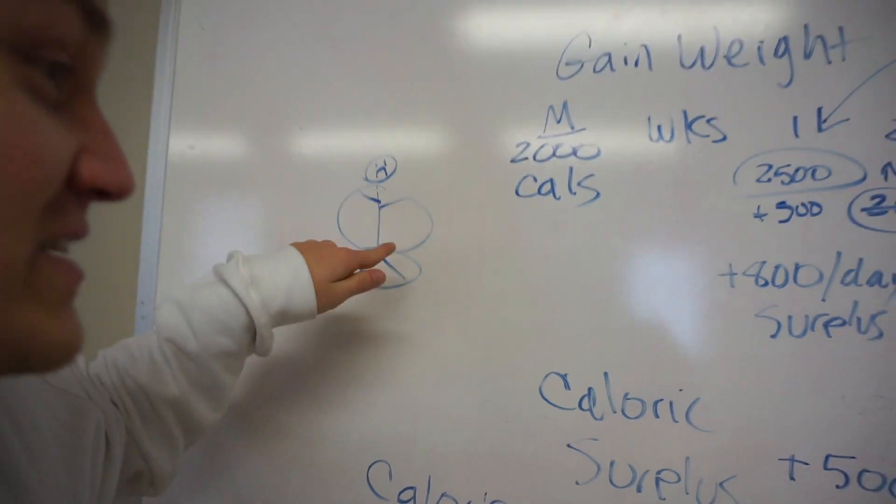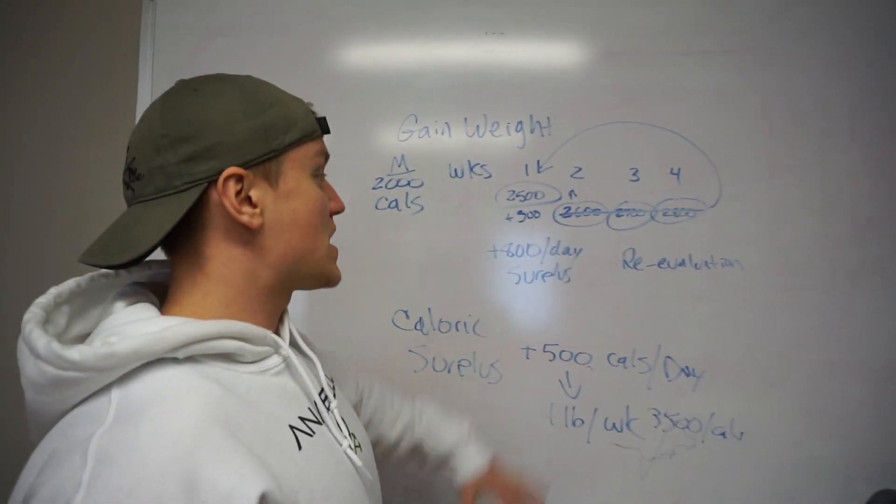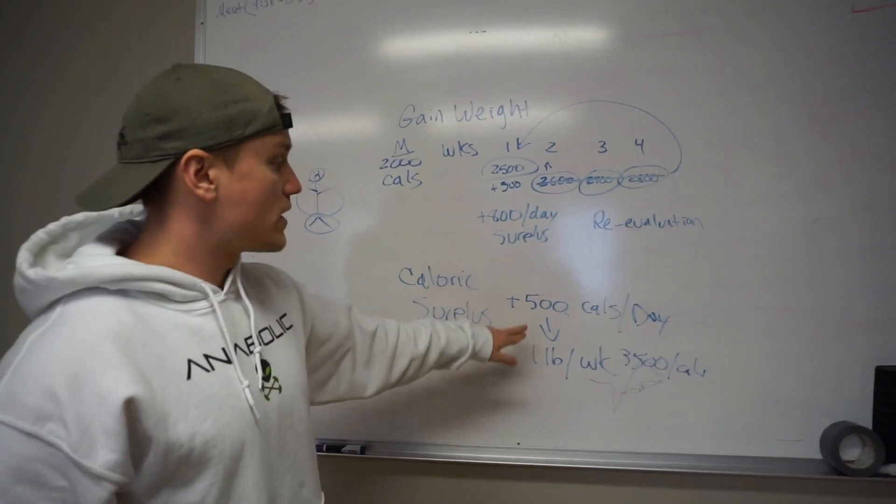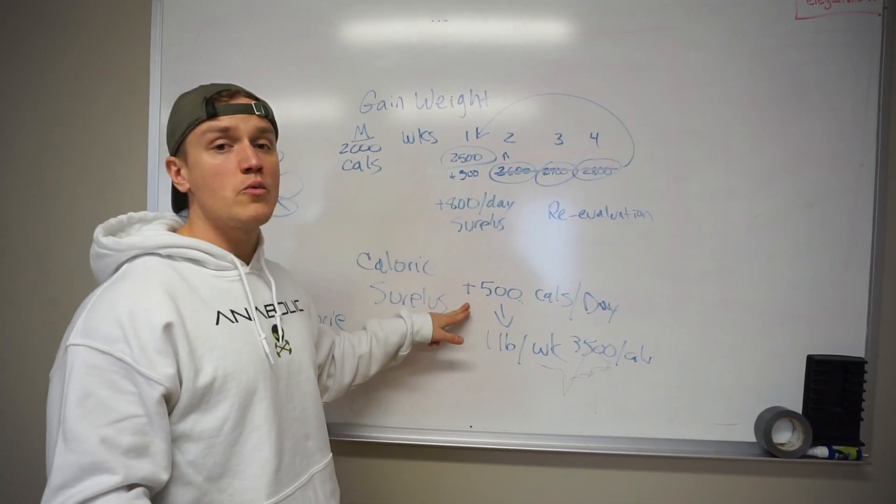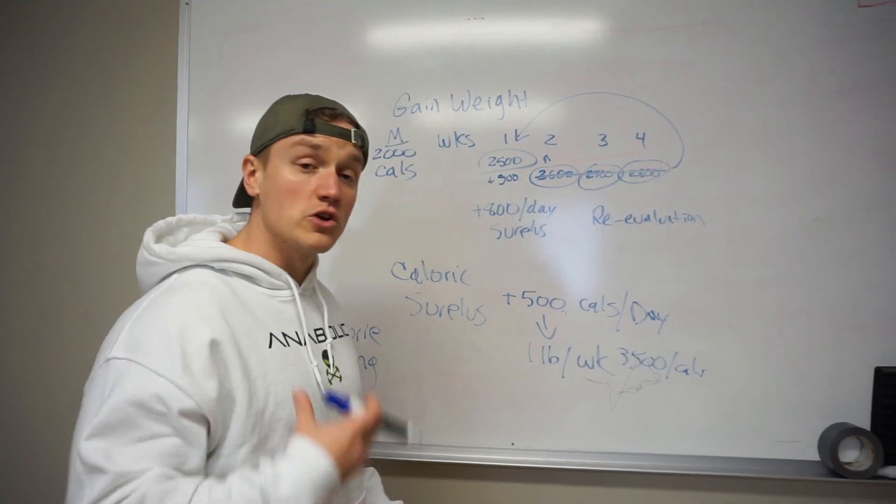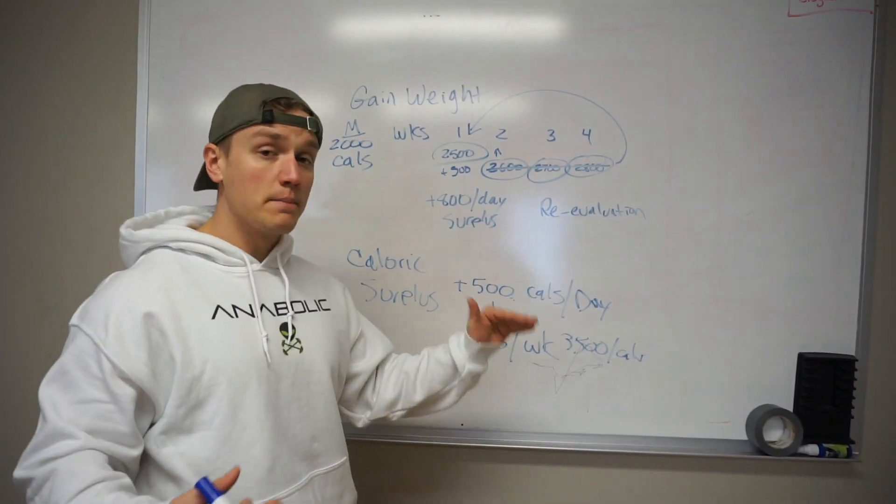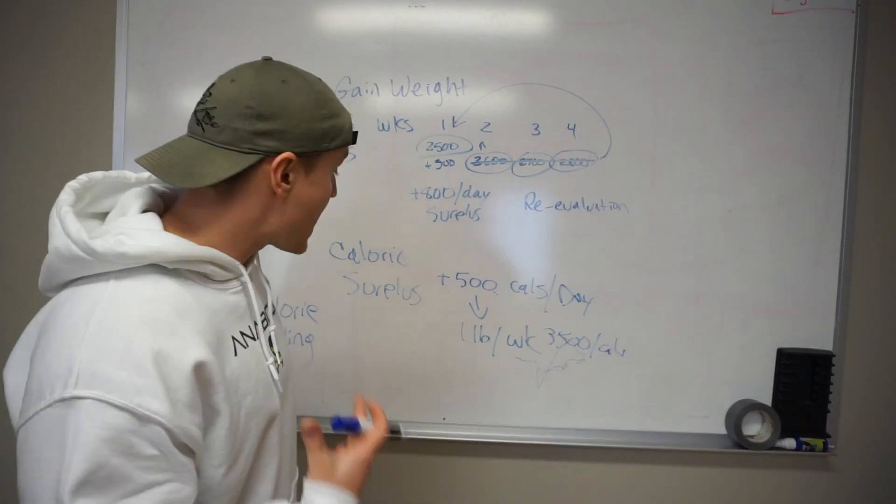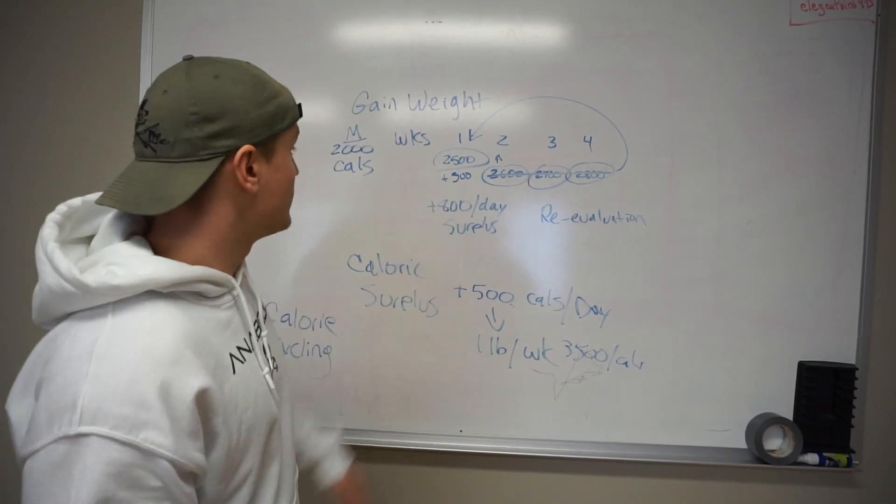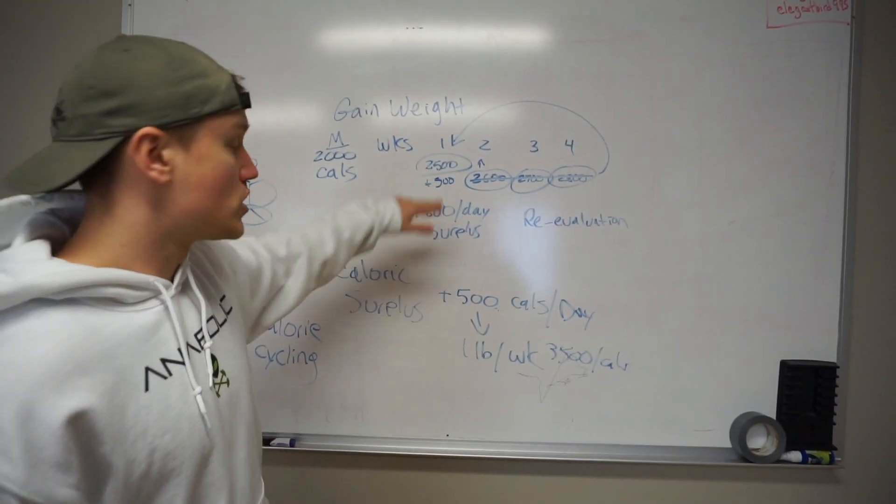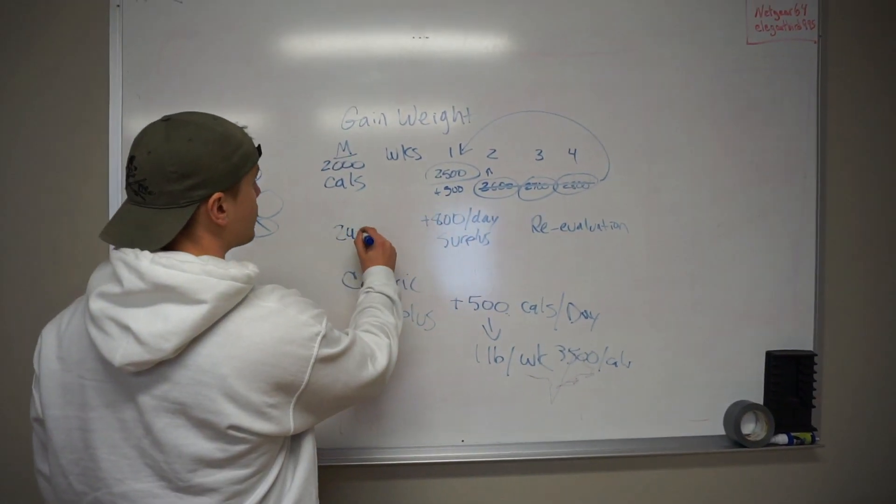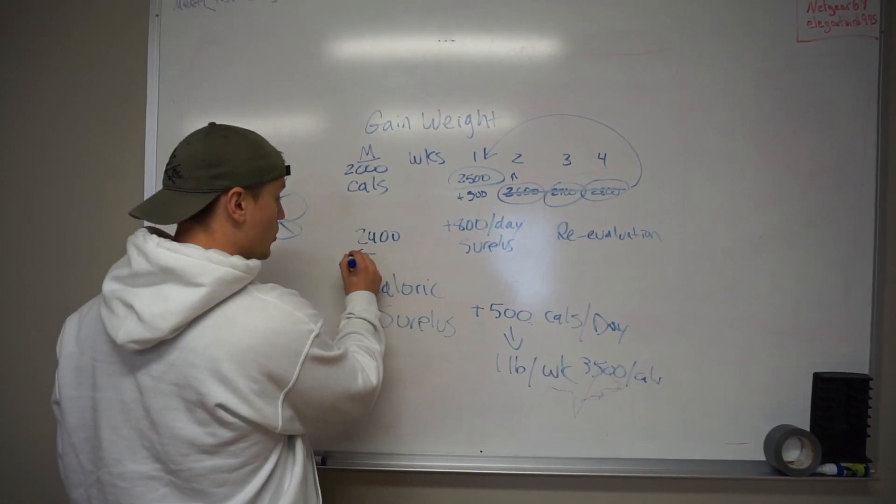So with calorie cycling, what I recommend doing is going up 500 calories per day to start. That way you're in a caloric surplus. Watch the scale for that week. Make sure you're gaining a pound. If you're not gaining a pound, you need to go up. And if you're gaining more than a pound, I recommend that you cut back a little bit. So if you're gaining more than a pound off that 2,500, that 500 surplus, take it back down to 2,400. Work your way backwards instead of forwards.